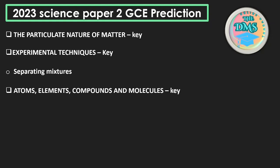The next topic is atoms, elements, compounds, and molecules. This is a key topic. Ideally this should be called 'classes of substances' since substances exist as elements, compounds, and molecules, with atomic structure falling under that. Regardless, this topic covers bonding, chemical formulae, and equations.